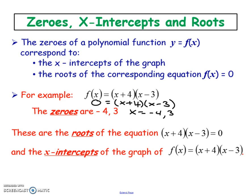Here's something I always notice students do on a test that I take marks off for: if you say x equals 2, negative 4, and positive 3 for your zeros and don't include that y equals zero, it's not completely correct. When discussing x-intercepts, your y value should be zero. Make sure you write that before listing your x-intercepts.